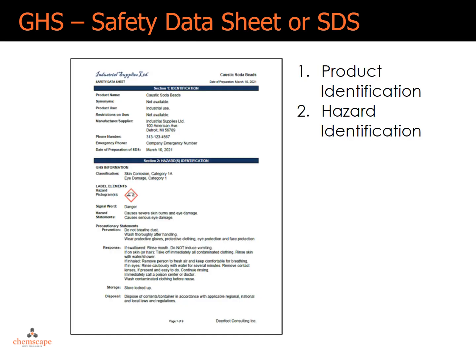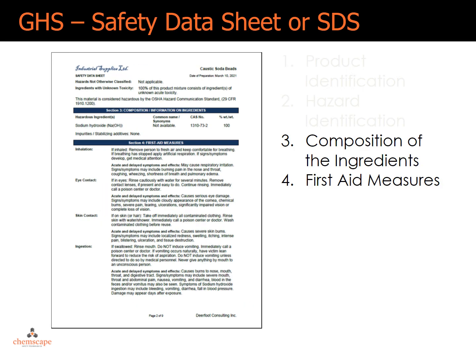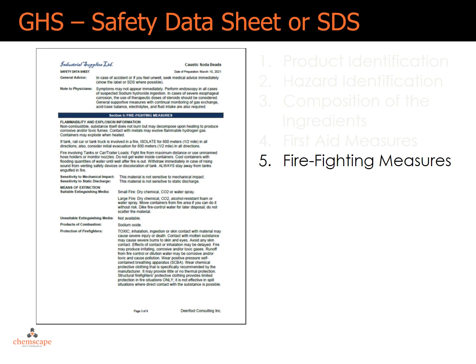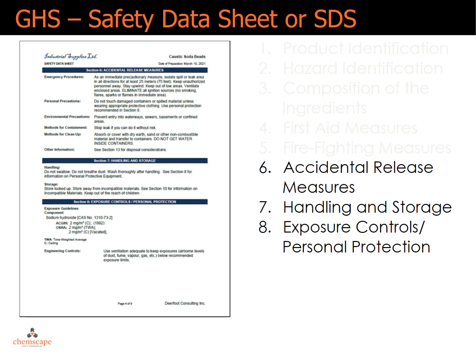GHS lays out 16 sections that need to be on an SDS, including Section 1 for product identification, Section 2 for hazard identification, Section 3 for composition of the ingredients, Section 4 first aid measures, and Section 5 for firefighting measures. Section 6 lists accidental release measures.